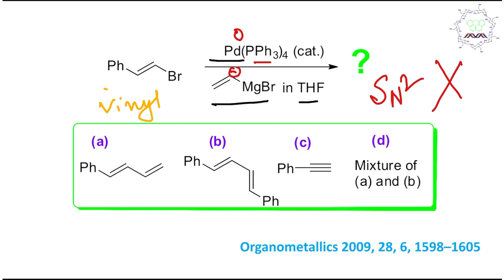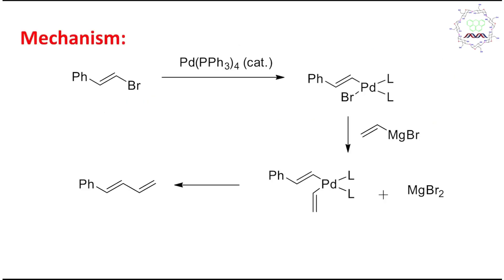This reaction follows a specific pathway. The first step is called oxidative addition of the vinyl carbon–bromine bond to palladium. The oxidation state of palladium is initially zero. The sigma bond coordinates to palladium, one triphenylphosphine leaves, and then oxidative addition occurs — palladium donates two electrons, the C–Br bond breaks, giving a carbanion-like carbon (δ⁻) and Br⁻. The oxidation state of palladium becomes +2.